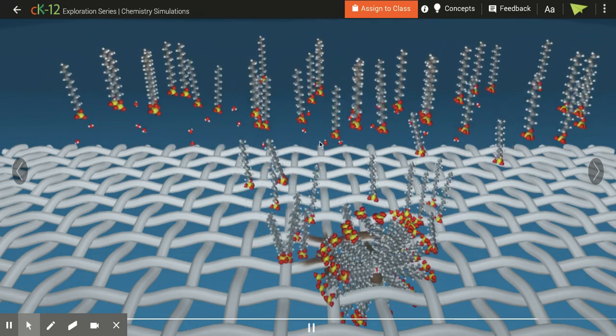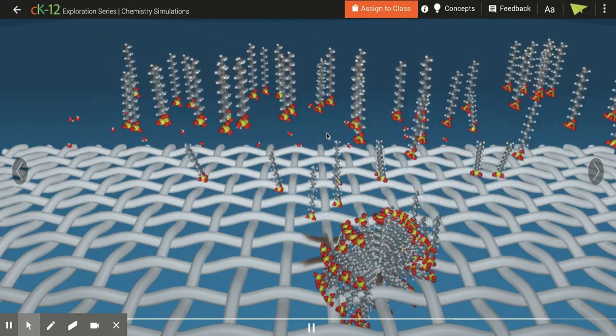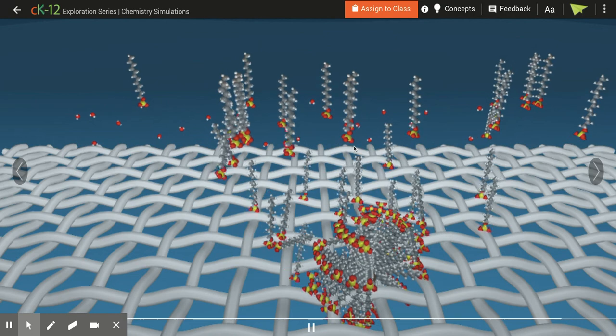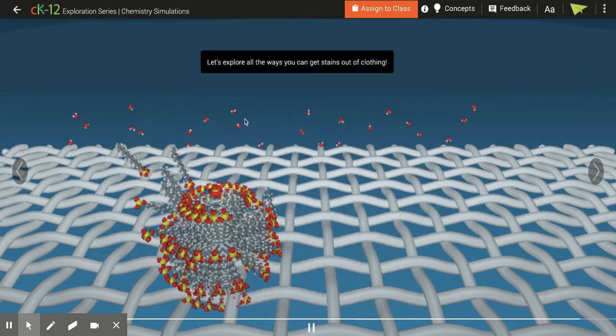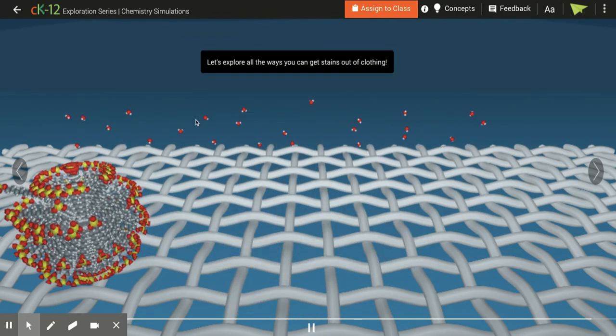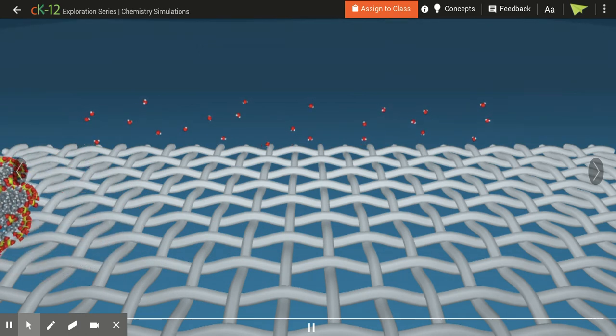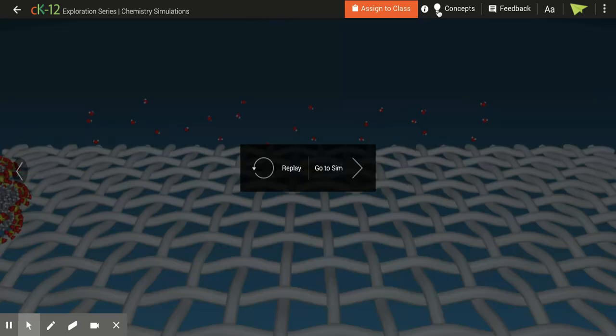And you can see all the polar parts, the heads, are facing out towards the water. And the water can carry that whole greasy stain away because of that soap micelle.